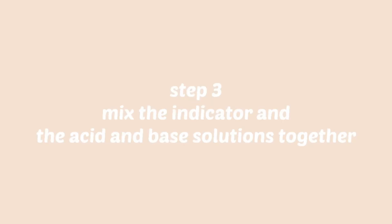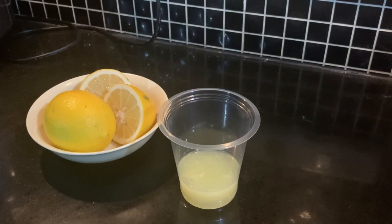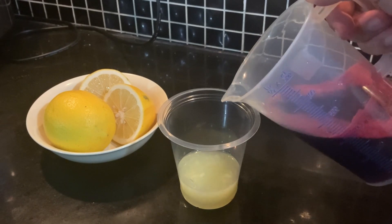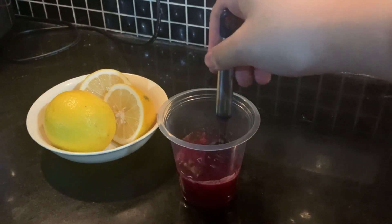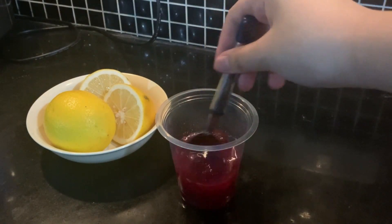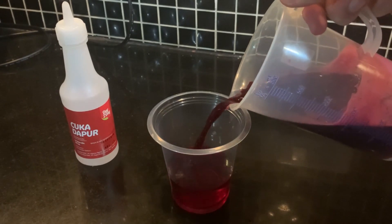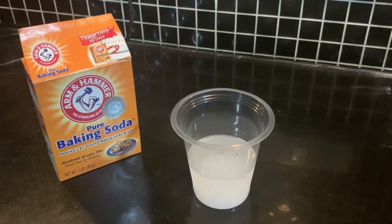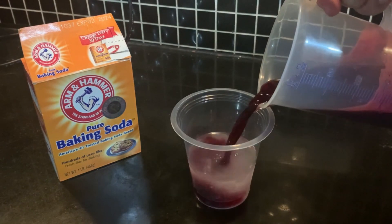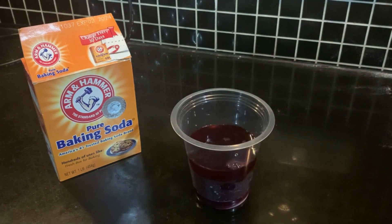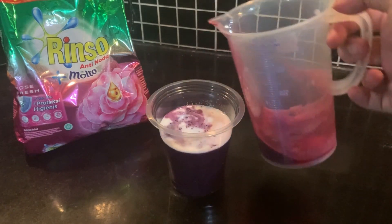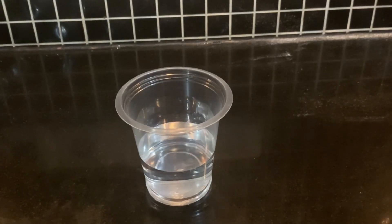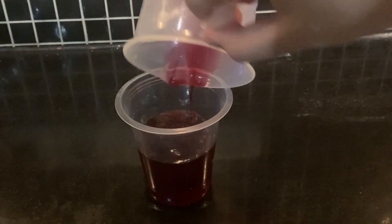The third step is to mix the acid and base solutions with the indicators together. First, we're going to mix the acid solutions — the first is lemon, make sure to stir it well. The second acid is white vinegar. Now we're going to mix the base solutions — the first is baking soda, and the second base is the detergent solution. And lastly, we're going to mix it with the neutral one, which is mineral water.